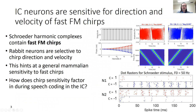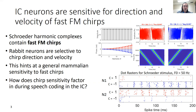We've observed sensitivity to fast chirps in rabbits and gerbils, which suggests this may be a property of the general mammalian IC that may extend to humans as well. We know that speech and especially vowels contain lots of chirping features that these neurons may be equally sensitive to. So the question we want to ask is: how does this novel chirp sensitivity factor into speech coding in the IC?